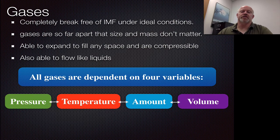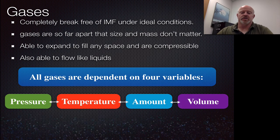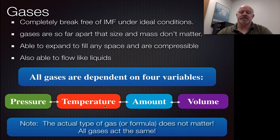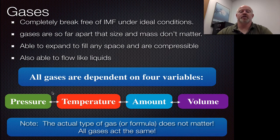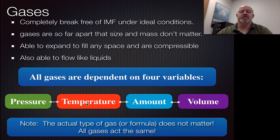We want to make sure we understand that gases do have some dependability on variables. Those variables are pressure, temperature, amount, and volume. Notice how it doesn't talk about mass here or what type of substance it is. It really is: how much pressure is there, how hot is it, how many particles do we have, and what volume do they take up? These four variables are really the things that dictate how gases work.